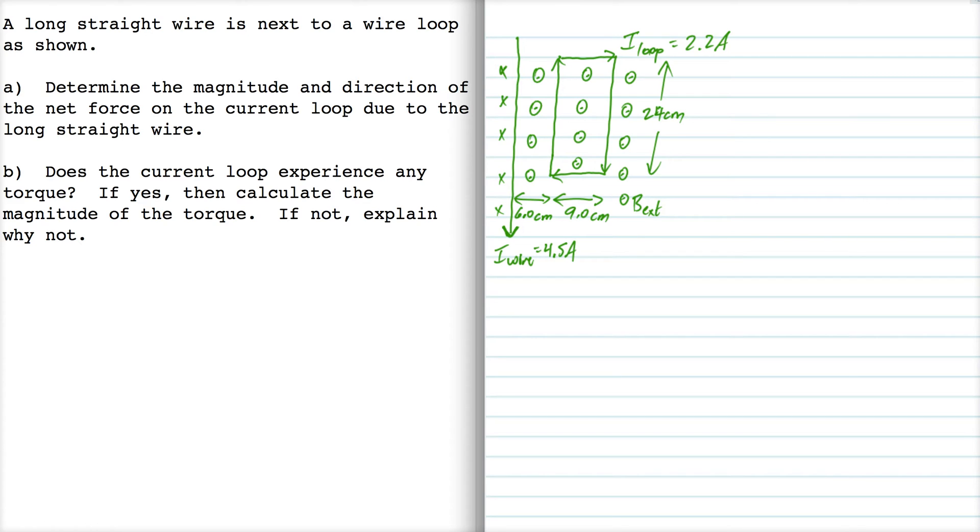So let's consider the forces acting on each of these wires. According to the right hand rule number two, with the current pointing up and the magnetic field pointing out of the page, that means that the magnetic force acting on this wire loop points into the loop.